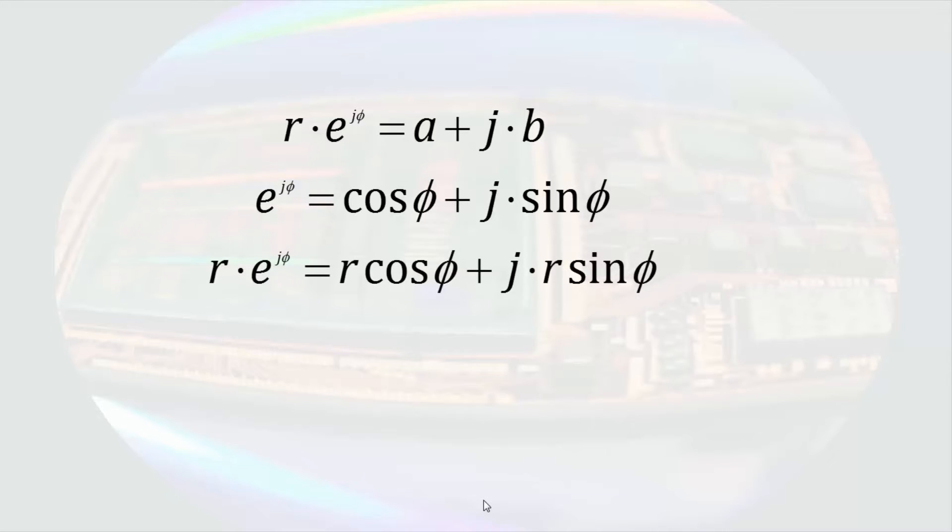If we multiply through Euler's equation by r, we see how to compute the real and imaginary components of what we will call the rectangular expression. The exponential expression will be called the polar representation of the complex number.